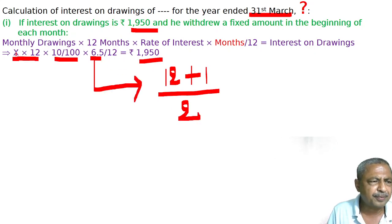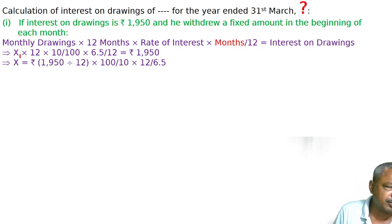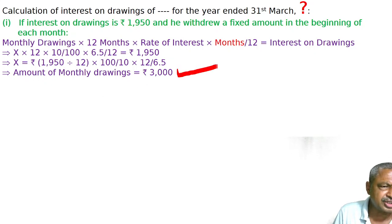Now find the value of X by solving the linear equation. Setting LHS equal to RHS, the amount of monthly drawings comes out to 30,000.